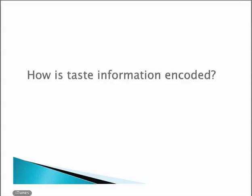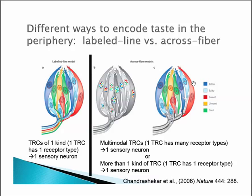I want to briefly go over how taste information is encoded, and specifically there are two different ways: labeled line encoding and across fiber encoding. These theories are essentially supported by two lines of evidence. Let's start with the simplest one, labeled line encoding.